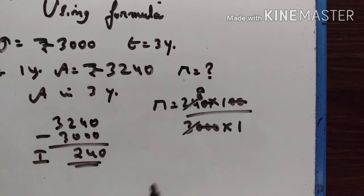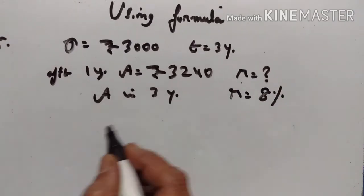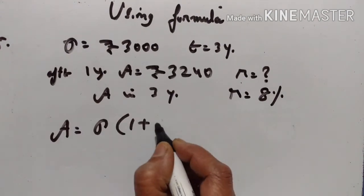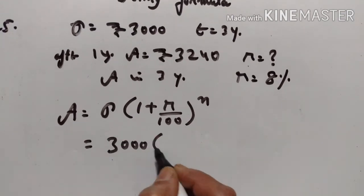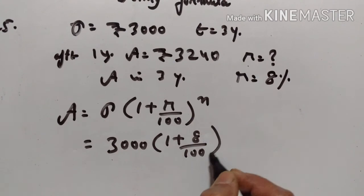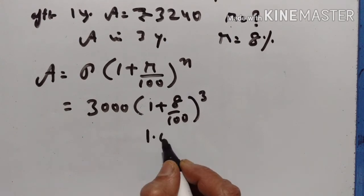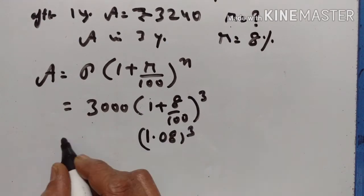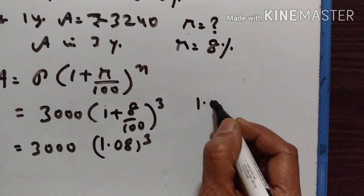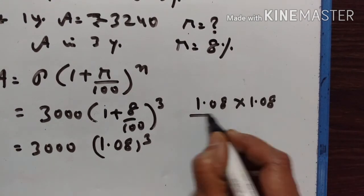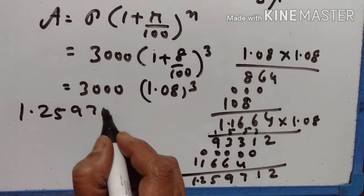So, 8% is the rate of interest. Rate is equal to 8%. Now, amount in 3 years: amount is equal to P into 1 plus R upon 100 raised to the power of N. P is equal to rupees 3000, rate is equal to 8%, N is 3 years. This is 1.08 cubed. 3000 into 1.08 multiplied three times gives 1.259712 into 3000.